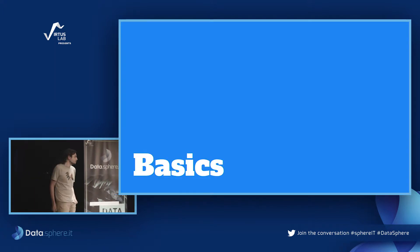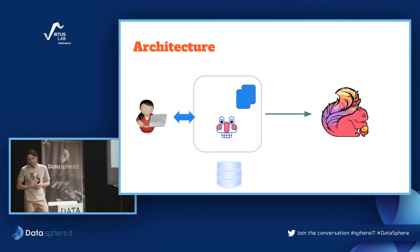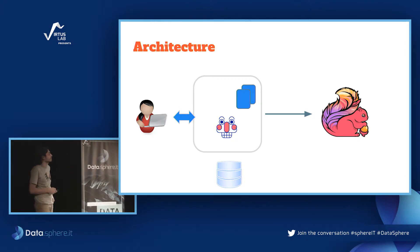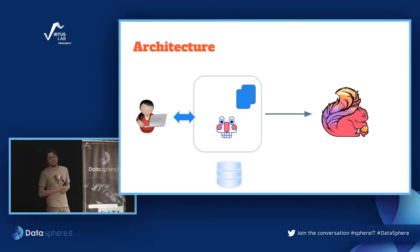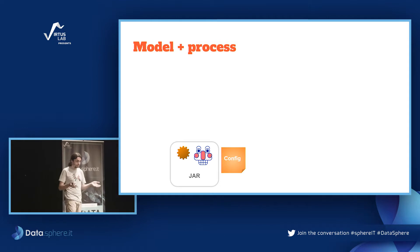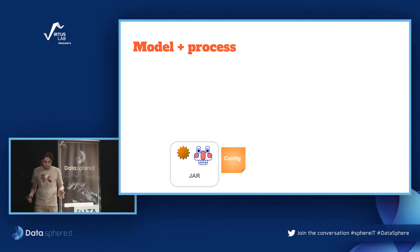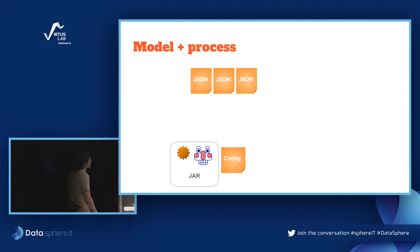So how does it look? The business analyst uses our web application to design processes, we have a database repository, and then processes are deployed to Flink and run. Before analysts can design anything, we have to write the code — put it in a JAR. This is Scala/Java code: we design the model, code integrations, configure where Redis and Kafka are, and so on.